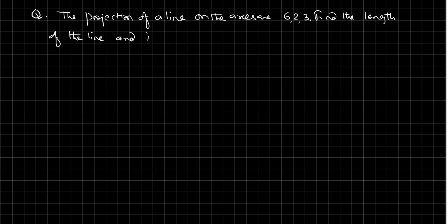Okay, the question is: the projection of a line on the axes are 6, 2, 3. Find the length of the line and its direction cosines.